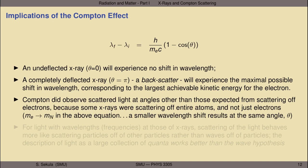During his experiments, Compton also observed scattered light at angles other than those expected from scattering off electrons alone. He determined that some x-rays were scattering not just off electrons in the atoms, but off entire atoms themselves. You can rework the algebra using the mass of an entire atomic nucleus rather than an electron, and you'll find that scattering at the same angle leads to a much smaller wavelength shift, because the atom's mass is much bigger than the electron's mass.